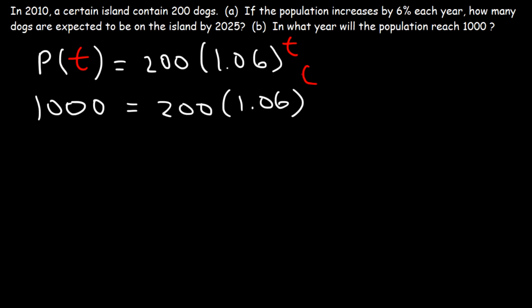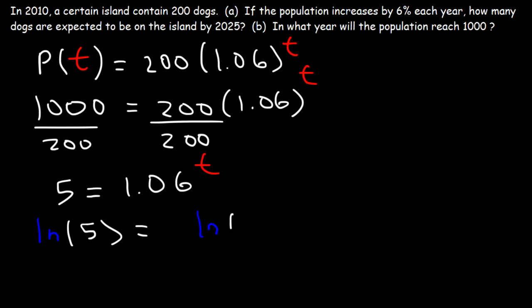So the first thing that we need to do is we need to divide both sides by 200. 1,000 divided by 200 is 5. So now what we need to do is take the natural log of both sides. So the natural log of 5 will be equal to the natural log of 1.06, raised to the T. So now let's move this variable to the front.